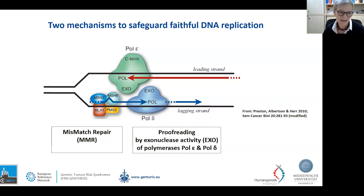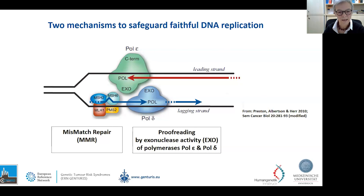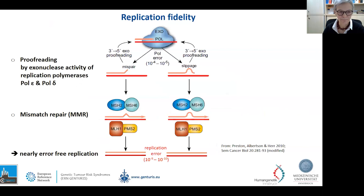The mismatch repair system recognizes errors and corrects them. I just want to mention that we have four important proteins in this mismatch repair system: MLH1, MSH2, MSH6, and PMS2, and these proteins are encoded by genes with the same names. These mismatch repair genes together with the proofreading of the polymerases ensure that after replication, the new DNA is nearly error-free — less than six errors per diploid genome during a cell division.